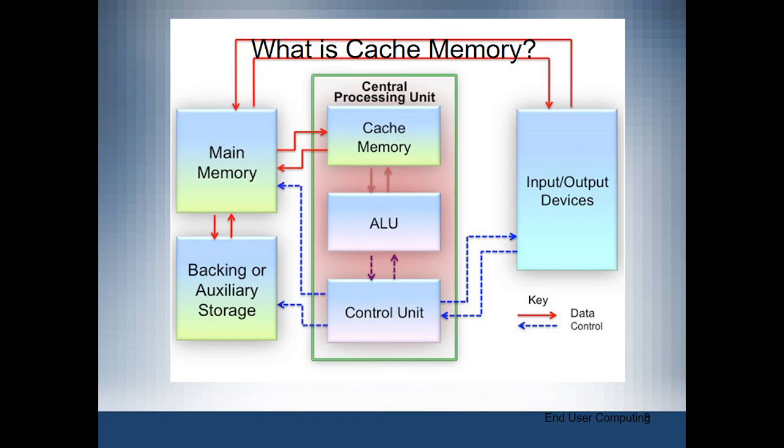Welcome learner. So what is cache memory? This is a very fast or super fast memory that stores frequently accessed data.